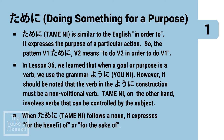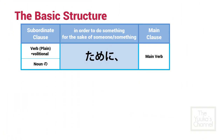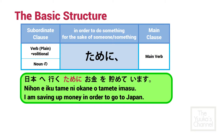When tameni follows a noun, it expresses 'for the benefit of' or 'for the sake of.' The basic structure is: verb in plain form, or noun plus no, plus the grammar tameni. Example: Nihon e iku tame ni okane wo tamete imasu — I am saving up money in order to go to Japan. Kazoku no tameni uchi wo tatemasu — I am going to build a house for my family.